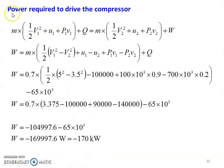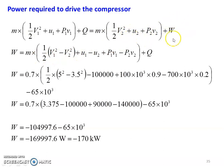Now, to find the power required to drive the compressor, write down the steady flow energy equation: M into (½V1² + U1 + P1V1) + Q = M into (½V2² + U2 + P2V2) + W. W is the unknown — the power required to drive the compressor. Rearranging: W = M into (½(V1² − V2²) + (U1 − U2) + (P1V1 − P2V2)) + Q.